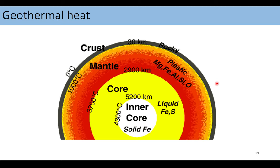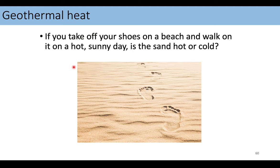The next thing to think about is geothermal heat. The inner core is about the temperature of our sun — it is very, very hot. We know that standing on the surface of the earth, we are not at the temperature of the sun. There's much more heat in the center of the earth than there is on the surface.